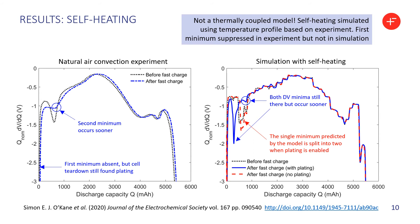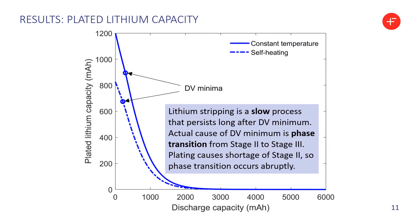Why is that happening? Another luxury of modelling is that you can track how much lithium metal is in the cell at any given time. It turns out lithium stripping persists long after the dV minimum. The actual cause of the minimum is a phase transition from stage 2 of lithiated graphite to stage 3. The reason it occurs so much more abruptly and sooner than in the case without plating is because lithium plating uses up lithium ions that would otherwise be used to make stage 2, causing a shortage of stage 2 and the transition occurs sooner.